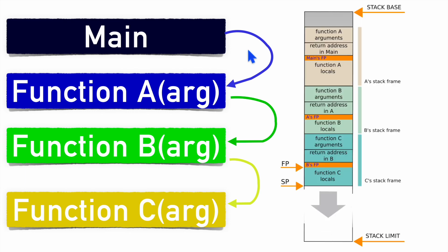In stack memory, when you call function A from main, the arguments of function A are stored in the stack, and then the return address of the main function is stored — this is the main frame pointer. After function A completes, execution returns to that address. You may also have local variables inside function A, which are stored in the stack frame, making it function A's stack frame. For every function, a stack frame is pushed into the stack memory.